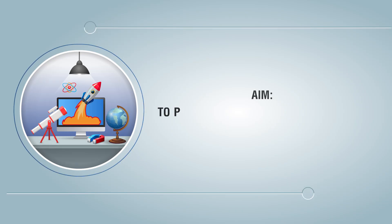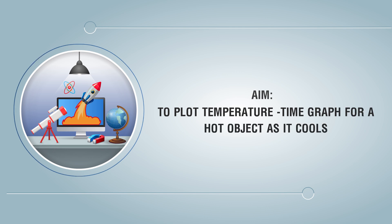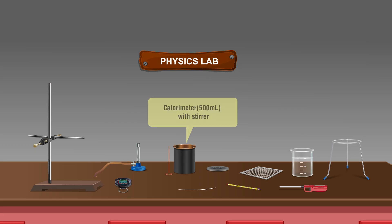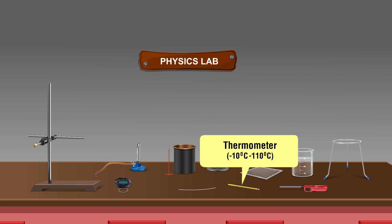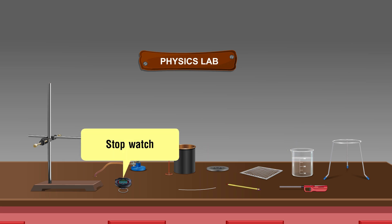Aim: to plot temperature time graph for a hot object as it cools. Materials required: calorimeter 500 ml with stirrer, lid with two holes, thermometer minus 10 degrees Celsius to 110 degrees Celsius, stopwatch or stop clock, spirit lamp or Bunsen burner, water.